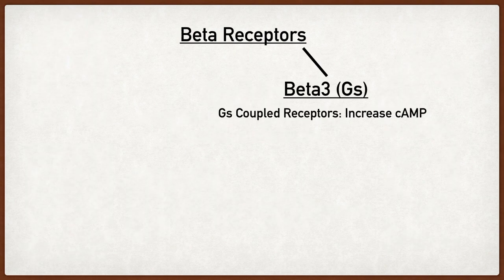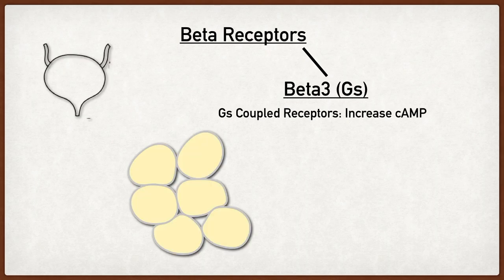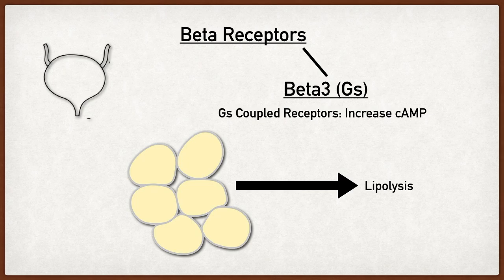The final beta receptor type is beta 3 receptors. Again they're coupled with GS proteins which increase cyclic AMP levels. All you need to remember with beta 3 adrenergic receptors is adipose tissue and the bladder. When beta 3 receptors are activated in adipose tissue it leads to the breakdown of fat. It was also recently discovered that there could be beta 3 receptors in the detrusor muscle of the bladder, and when activated this leads to bladder relaxation and decreased urination, similar to beta 2 receptor activation.